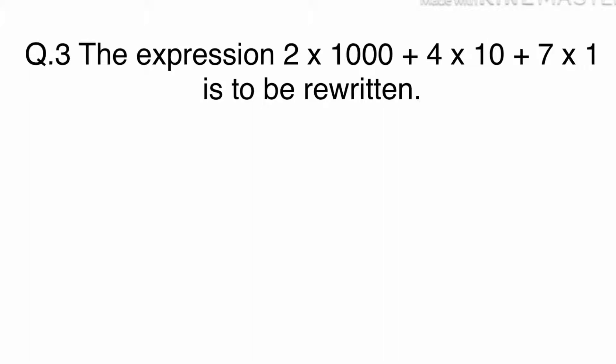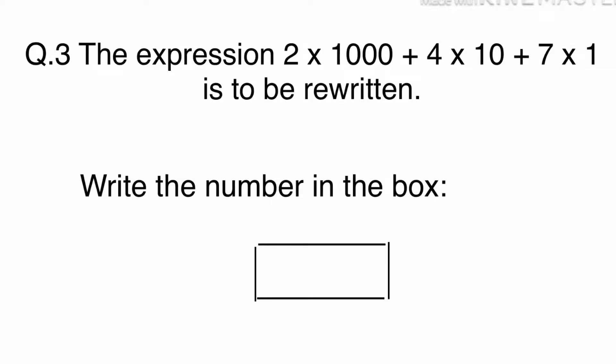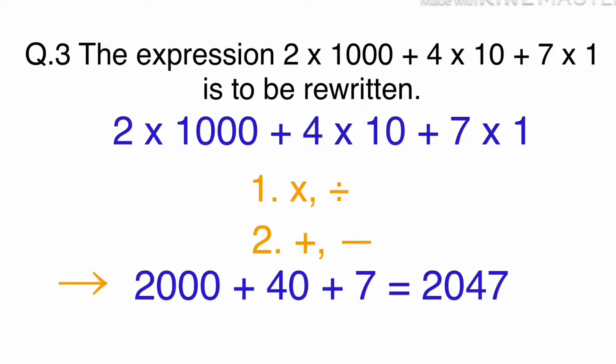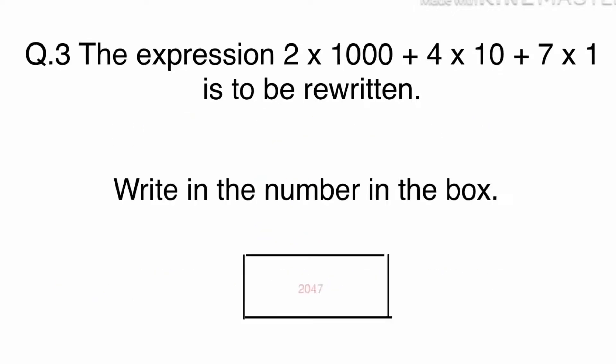Question 3. The expression 2 times 1,000 plus 4 times 10 plus 7 times 1 is to be rewritten. Write the number in the box. If multiplication, division, addition and subtraction are in the same question, multiplication and division is always first, and addition and subtraction always goes second. This is the common rule. So, 2,000 plus 40 plus 7 equals the answer. The answer is 2,047.